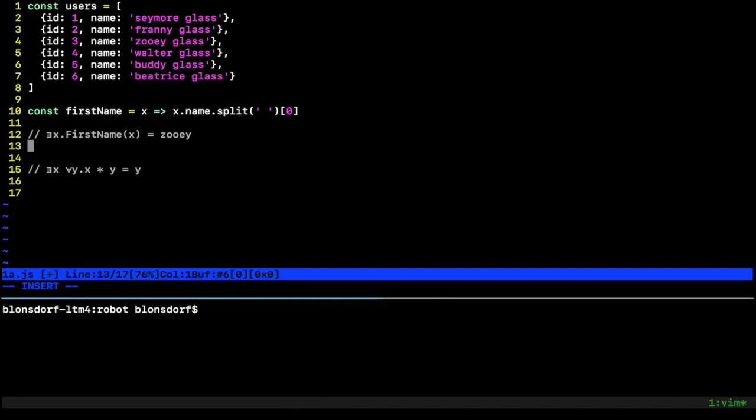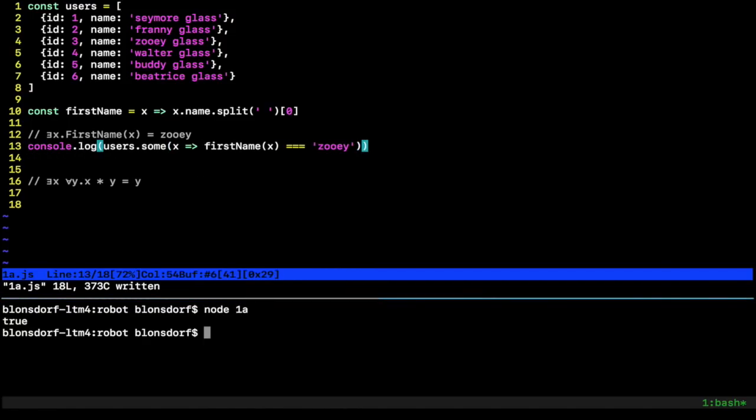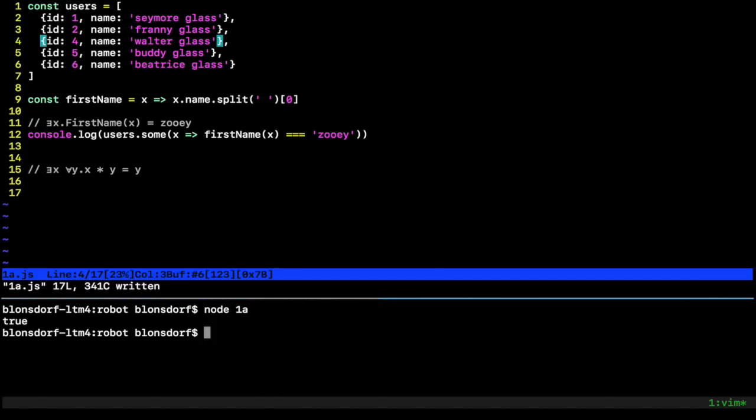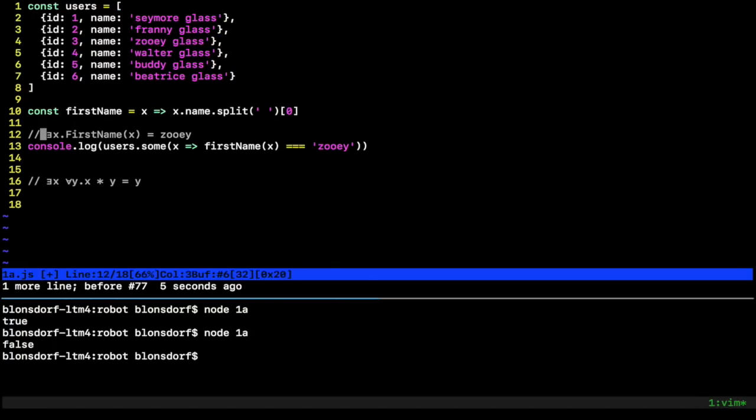So let's just go ahead and write this in code. We have our users, some X where their first name is equal to Zoe. And there we go. And that should be a true statement, right? Because we have one right there. There exists one. So let's just go ahead and console.log this console.log right in line there. And we'll just do node one in here. There it is true. It's true for that statement. If I get rid of Zoe there and run it again, it's a false statement. So yeah, so now we know there exists some user with name Zoe.